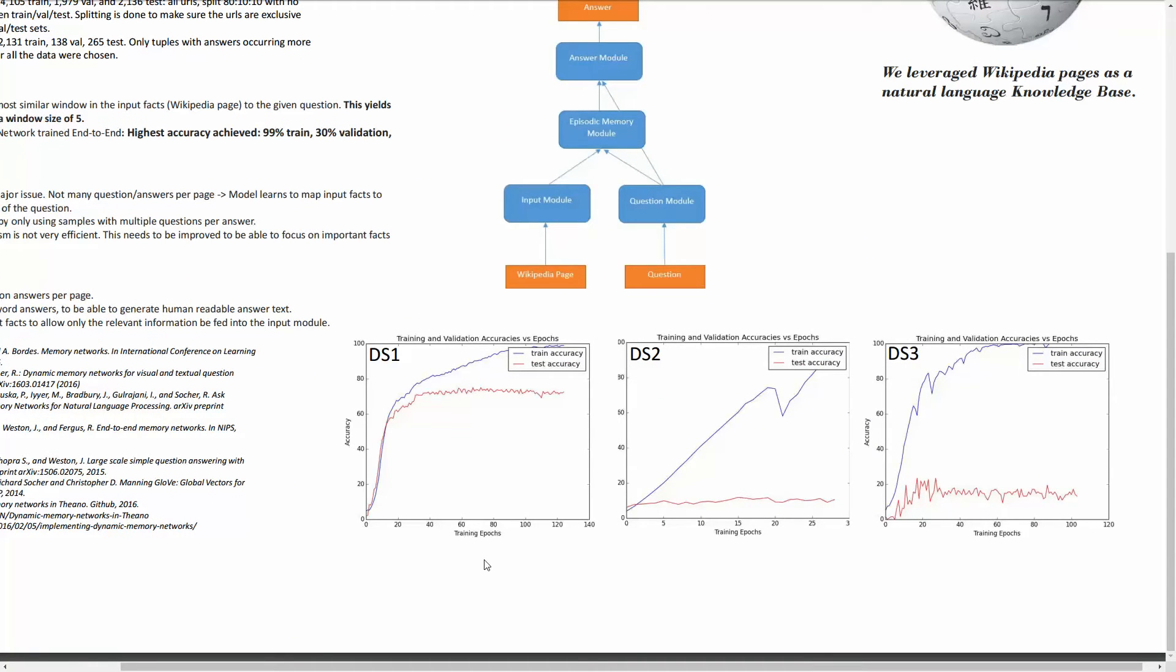However, there could be cases that the question answers are very similar between training and validation. So if the model is basically producing one answer for all the questions associated to one input fact, this could actually be falsely shown as high accuracy. As you can see in DS2 and DS3, we see that it's more about 20%, as we have claimed.